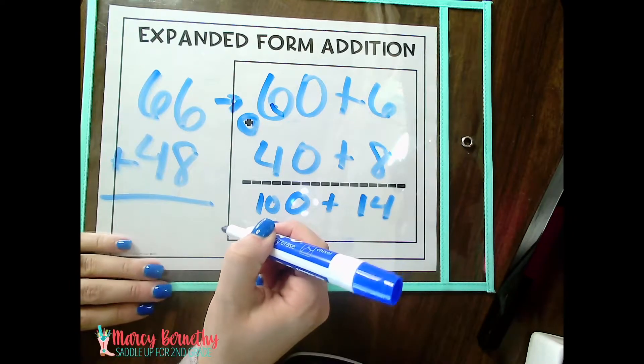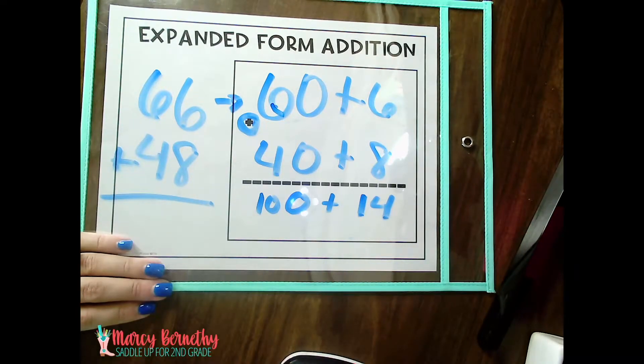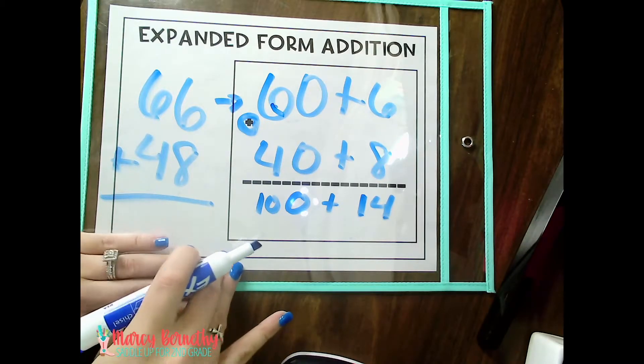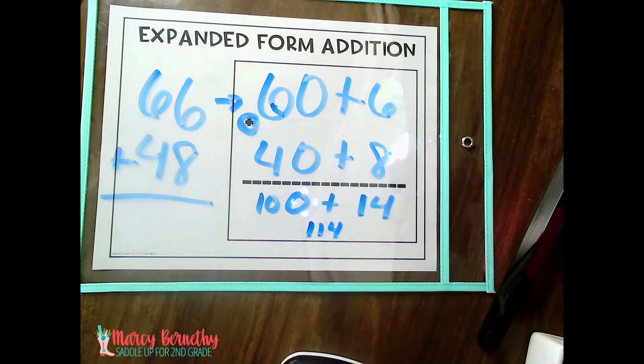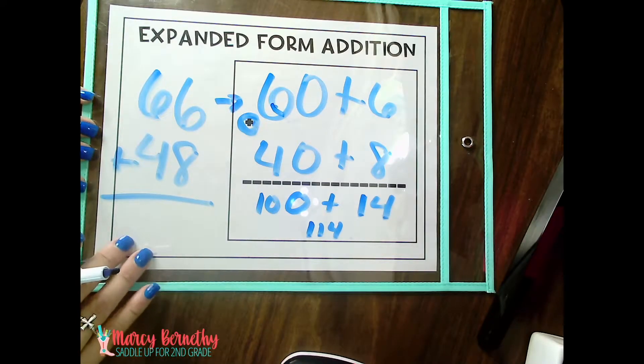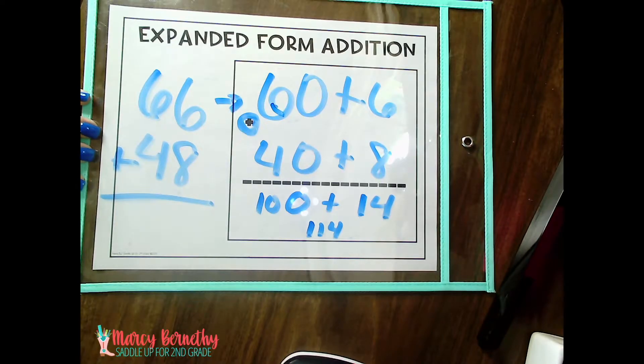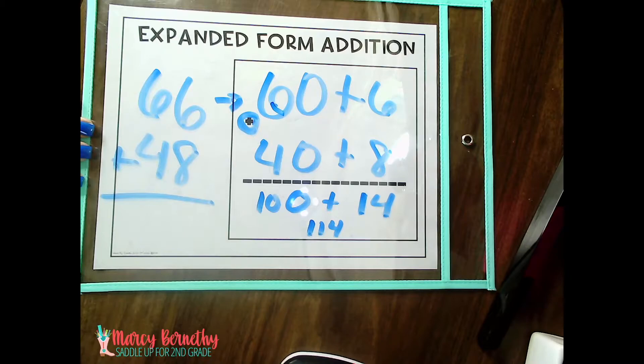And so then they could solve for the sum. They might choose to come over here and write the equation vertically, or they might can solve it mentally, but 100 plus 14 equals 114. And that is how you use the expanded form strategy for regrouping. Again, this is one of my favorite ones, and it's actually one of the most common ones that I have seen with my students. Once they get past the concrete part of it with using base 10 blocks and we're transitioning into more of that abstract learning, this strategy is a really good transitioning strategy for them. So I highly, highly recommend this one.